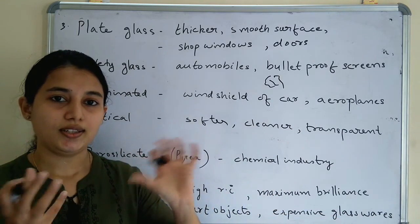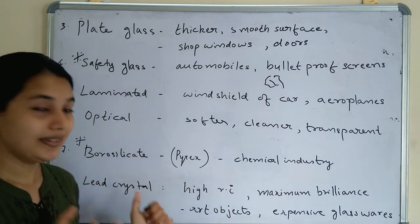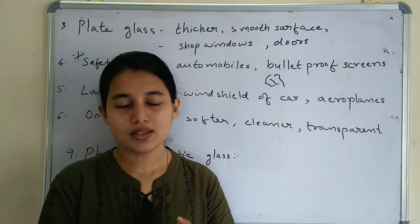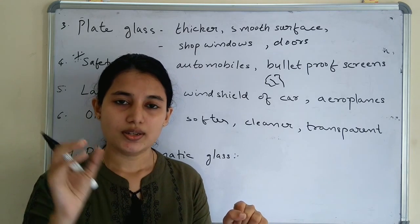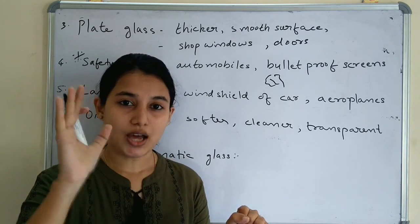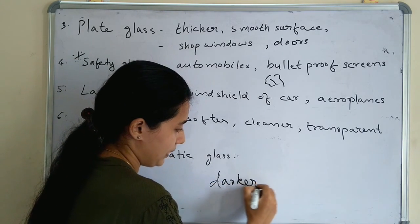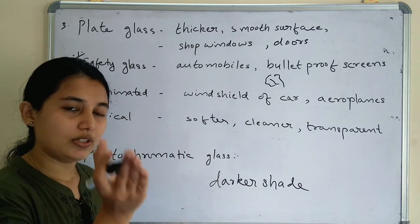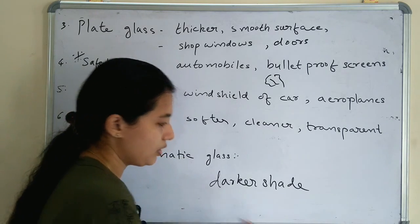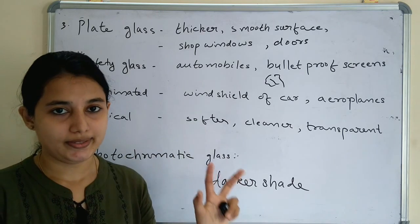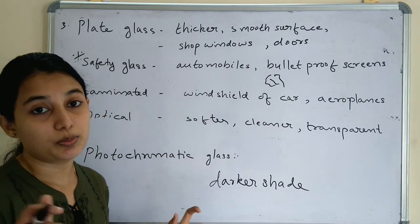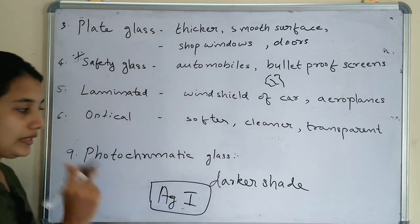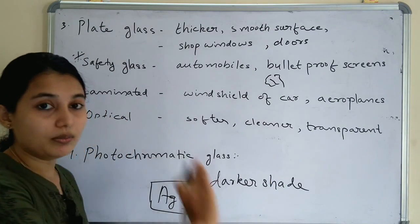The ninth type is photochromatic glass. You may have noticed in some vehicles that the glass has a darker shade in bright light and returns to its original shade in dim light. This is called photochromatic glass, and it is due to the deposition of silver iodate. So due to silver iodate, photochromatic glass behaves darker in bright light.